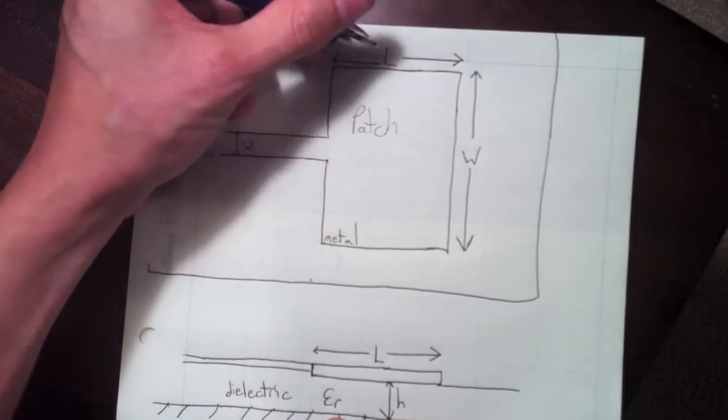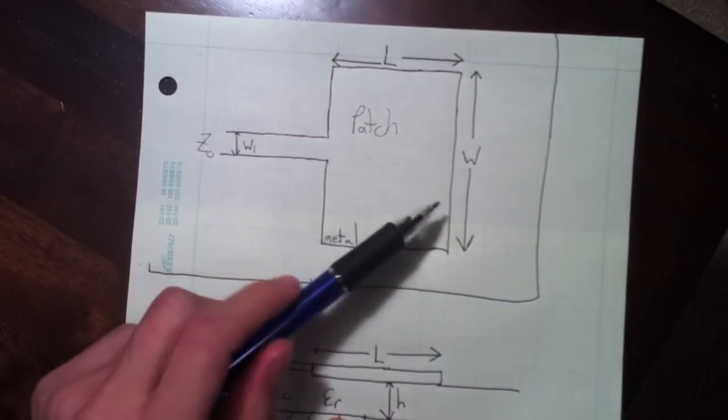You can change the characteristic impedance of transmission line Z0 by increasing W. The wider it is, the lower the characteristic impedance. Assume the length is given by L. This width is W.